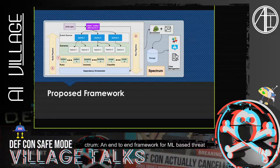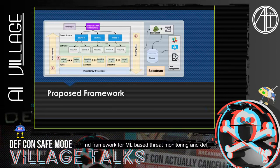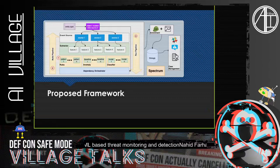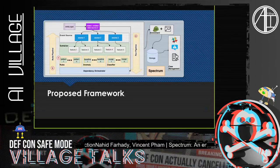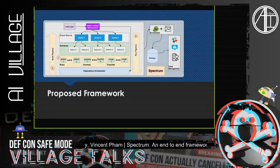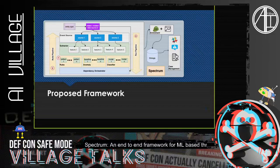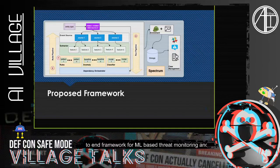The proposed Spectrum framework works as follows: starting from the top, we define a set of entities — in this case, employees. We identify the different data sources linked to those entities, so we might have three different event sources. From each individual event source, we have features. For example, an email dataset will have features such as where the email is being sent to, where it's sent from, the time of day, and the subject.